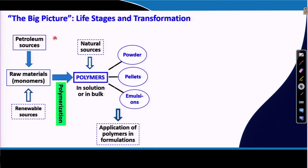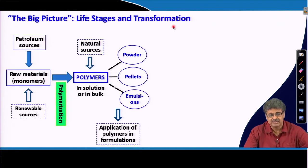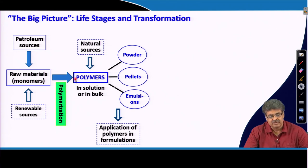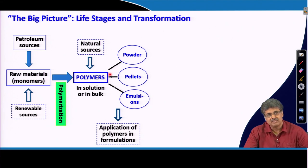Let us revisit the different life stages and transformation processes which we discussed earlier. We discussed how to synthesize polymers in the first few weeks, and then once the polymers were synthesized, we discussed in the following weeks how we can characterize them both in terms of their molecular weight and their chemical composition. Now, once we are ready with the polymers, we have to take these polymers to the final product formation.